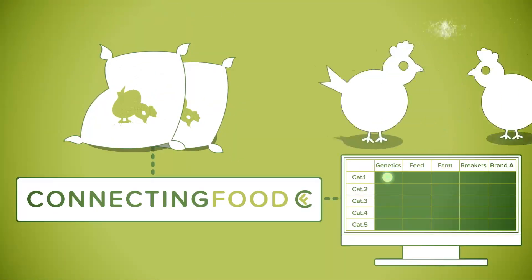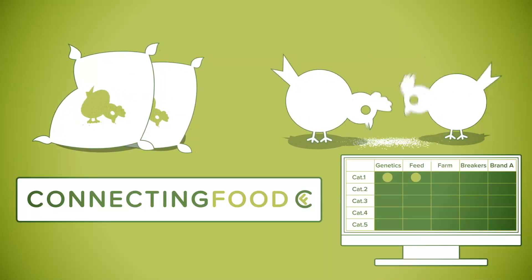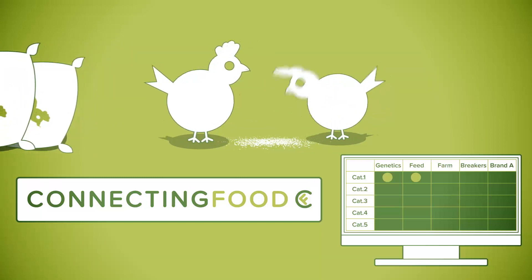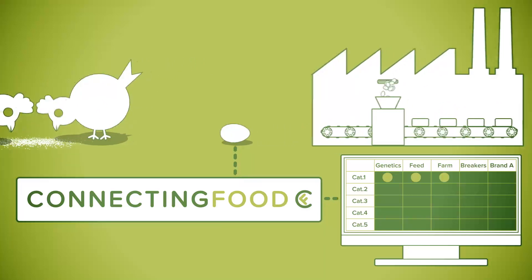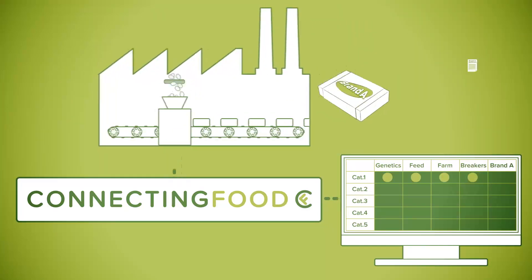The solution. Connecting Food has developed a tamper-proof method to continuously verify conformity levels at every stage of the chain compared with end product specifications. The results are followed on a screen by quality assurance teams of end product brand A.